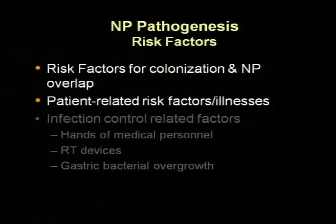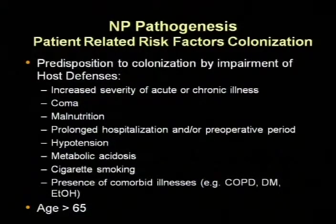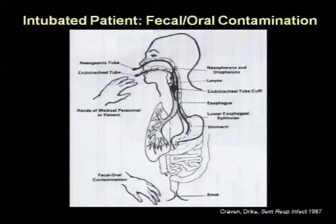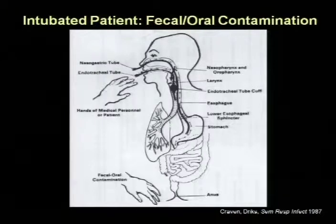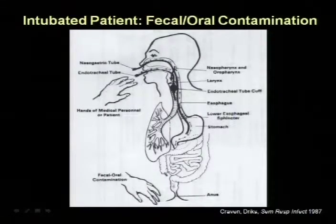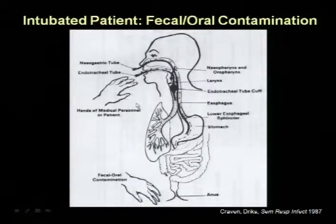Risk factors for colonization and nosocomial pneumonia actually overlap. There are patient-related factors, and infection control-related factors. The hands of the personnel are sometimes a factor, as are the hands of the patient. We've created a highway for bacterial transition by putting endotracheal tubes and NG tubes into place. Contaminated hands matter, and the anal-oral ability to transition organisms is relevant as well — usually from the patient, but sometimes from healthcare personnel.